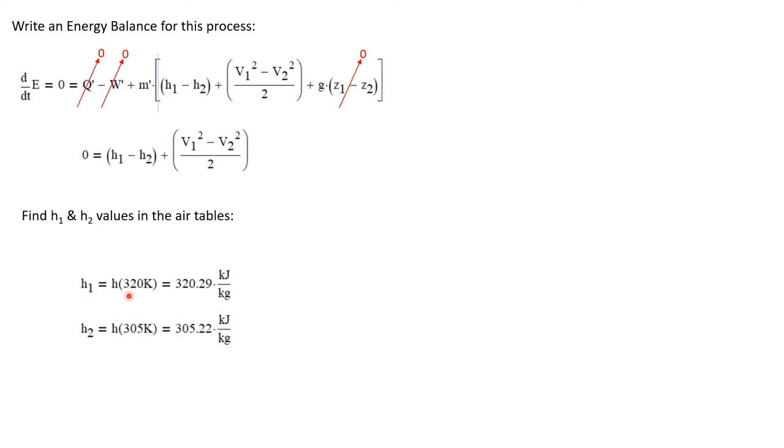So H1 is at a temperature of 320K. And so in the air table at 320K, I get an enthalpy value of 320.29 kilojoules per kilogram.